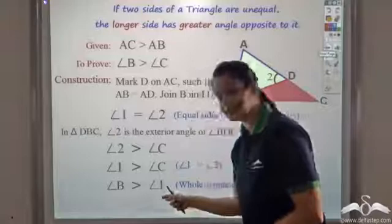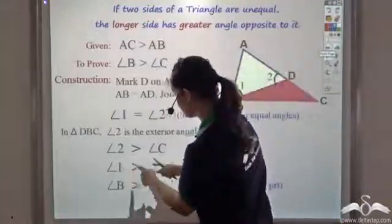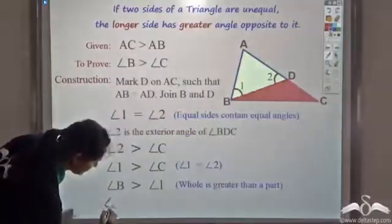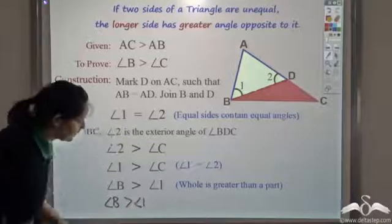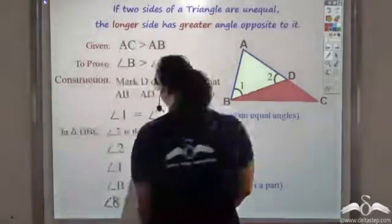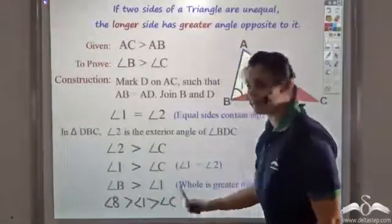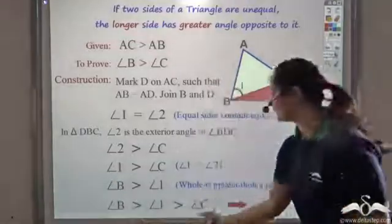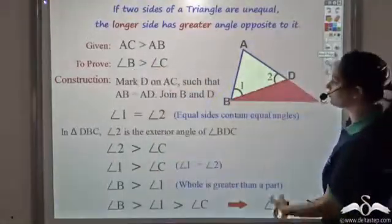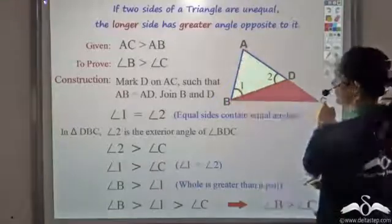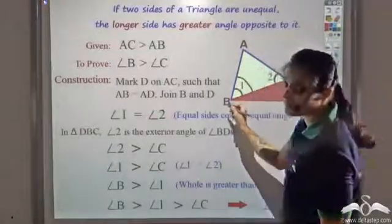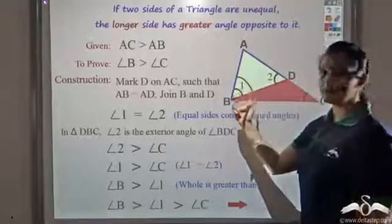I have angle B greater than angle 1, and angle 1 is greater than angle C. Therefore, angle B is greater than angle C. This is what I wanted to prove. If in a triangle AC is bigger than AB, then angle B — opposite to AC — is greater than angle C — opposite to AB.